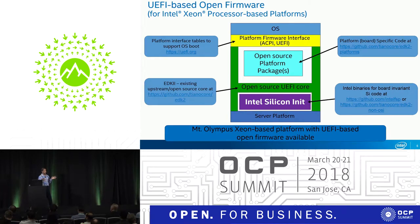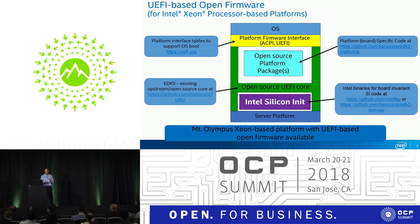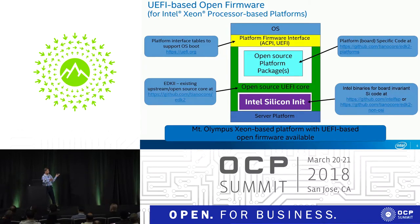The part that was missing is the platform package — all the stuff beyond the silicon itself. How do you talk to your platform? How do you initialize your memory and I/O devices? How many root complexes do you have on PCIe? That portion is this open source platform package. I'm happy to say that code is live now and you can go get it. Essentially, pretty much everything you do for platform firmware — basically BIOS — is available in open source, developed on top of Mount Olympus, which is an OCP platform.